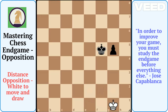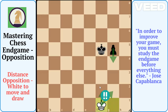Let's take another example where white is a pawn down but can draw the game using distant opposition. In this scenario, if it is white's turn, then white can win the distance opposition and force the draw. Can you find the only white move to win distance opposition? Yes — king to f1. Now, if black plays g4, then white has many good moves like king g2, king f2, etc. If black goes king e4 or king f4, then white can win direct opposition with king e2 or king f2 respectively.